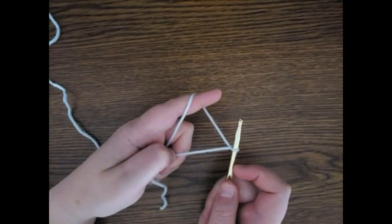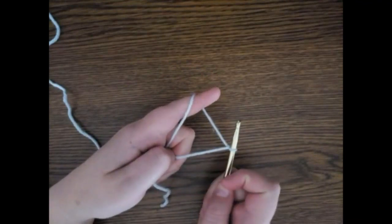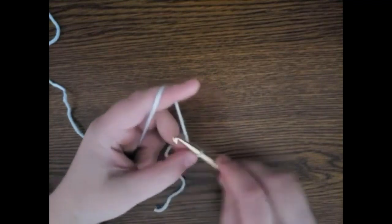Your yarn should now be in the shape of a triangle. If you cannot see the triangle, rewind the video and try again until you got it.